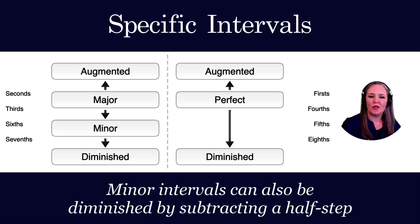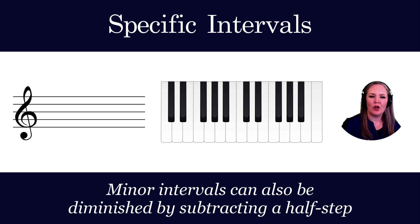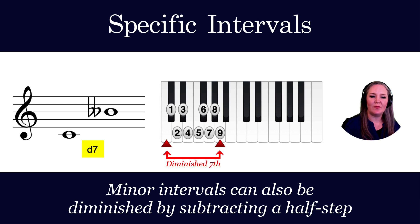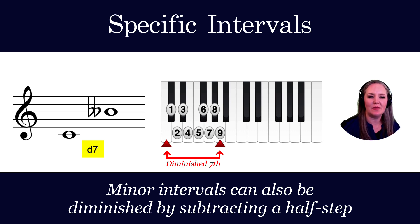Minor intervals can also be diminished by subtracting a half step. Recall that C to B is a major seventh with eleven half steps, and C to B-flat is a minor seventh with ten half steps. C to B-double-flat is a diminished seventh with nine half steps.